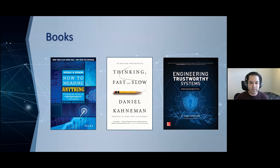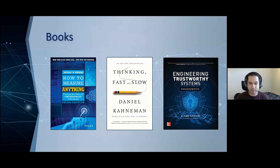Luckily, I think these problems have all been solved. These three books I would highly recommend. The first, How to Measure Anything — which also has a cybersecurity edition — talks about measurements, estimation, and the intangibles of business. Thinking Fast and Slow is another bestseller that highlights probability and bias, as humans are naturally bad estimators. And Engineering Trustworthy Systems talks about quantitative risk management and cybersecurity. There are also a number of books on threat modeling and risk management, like FAIR, that I would recommend.